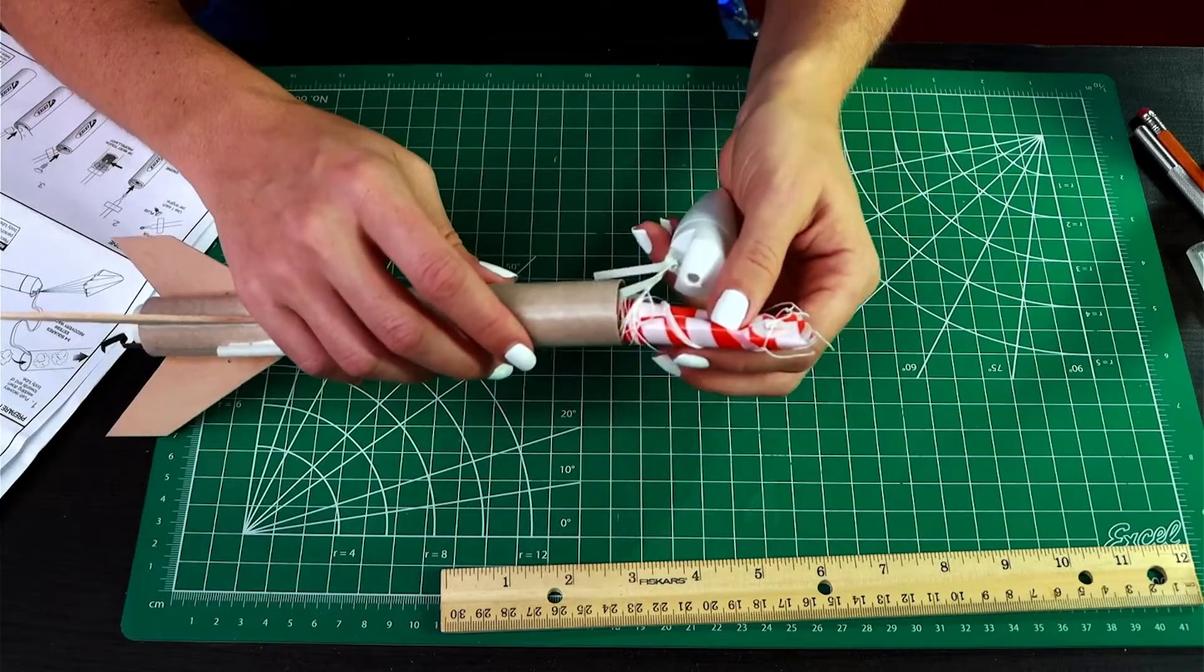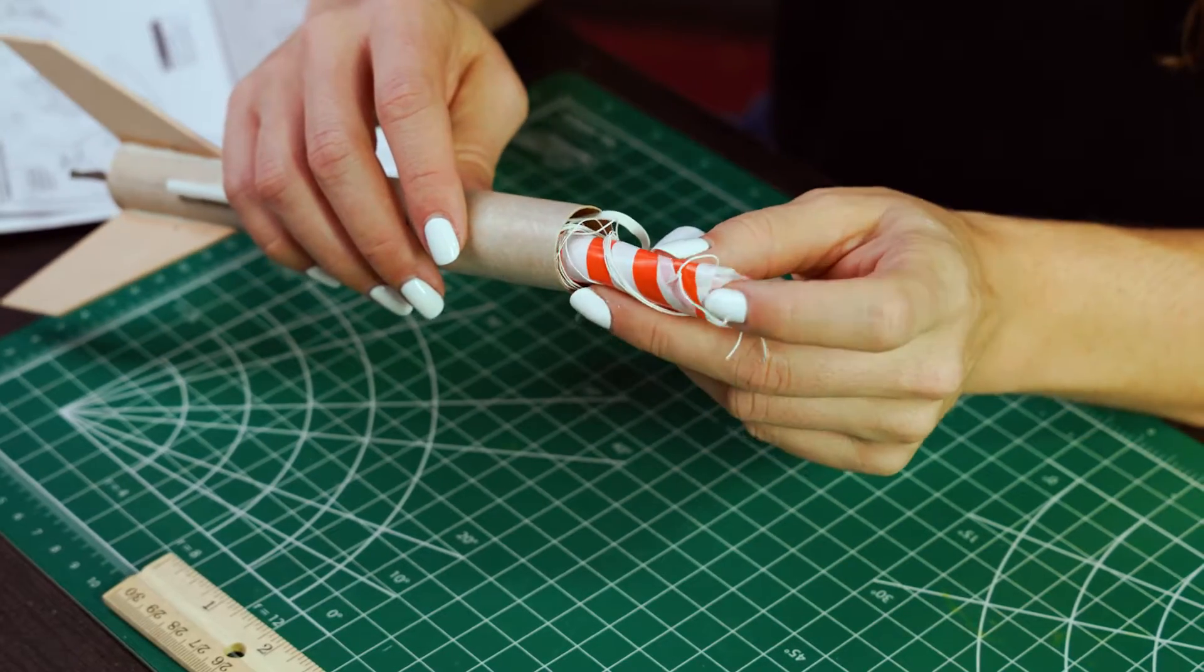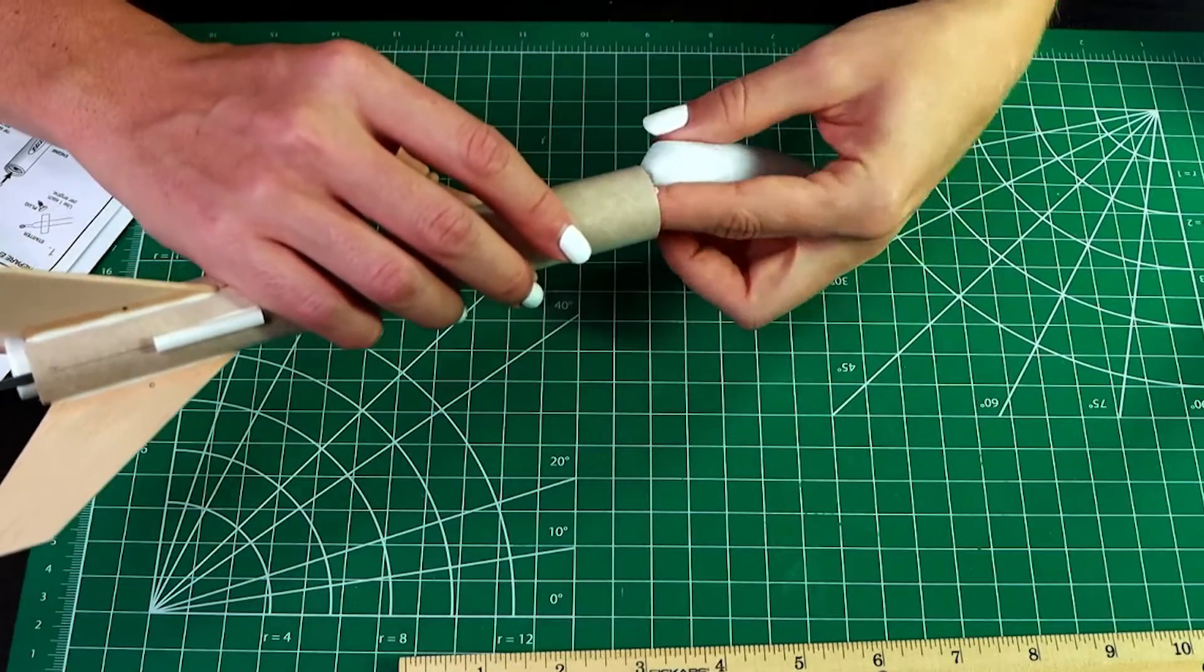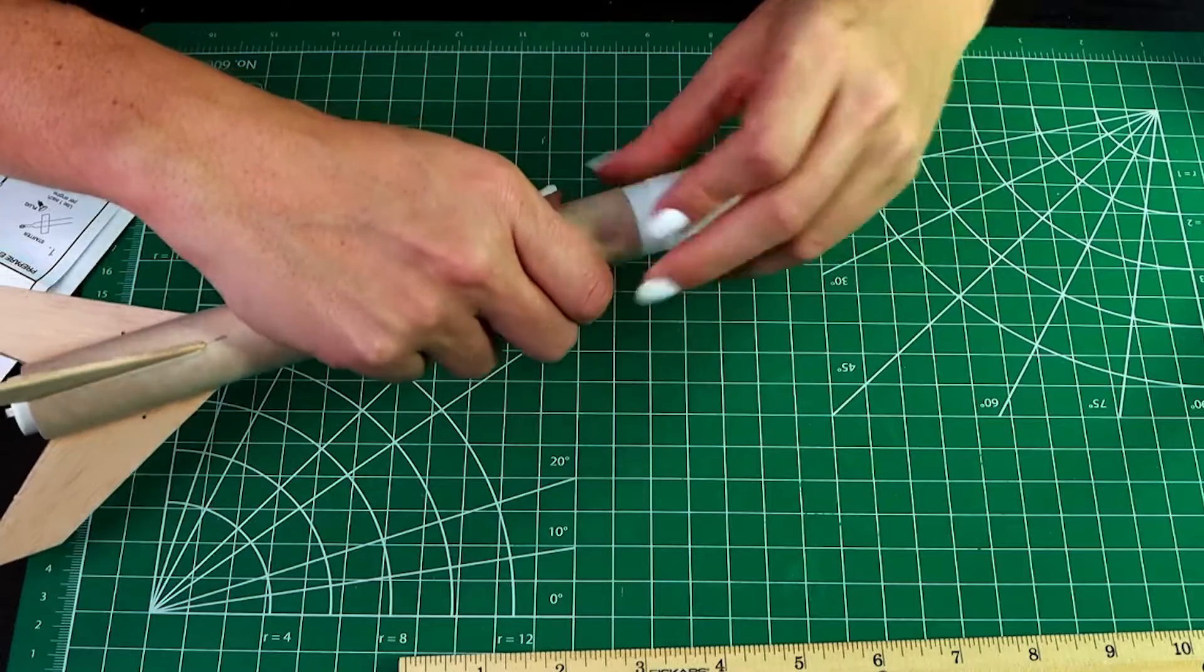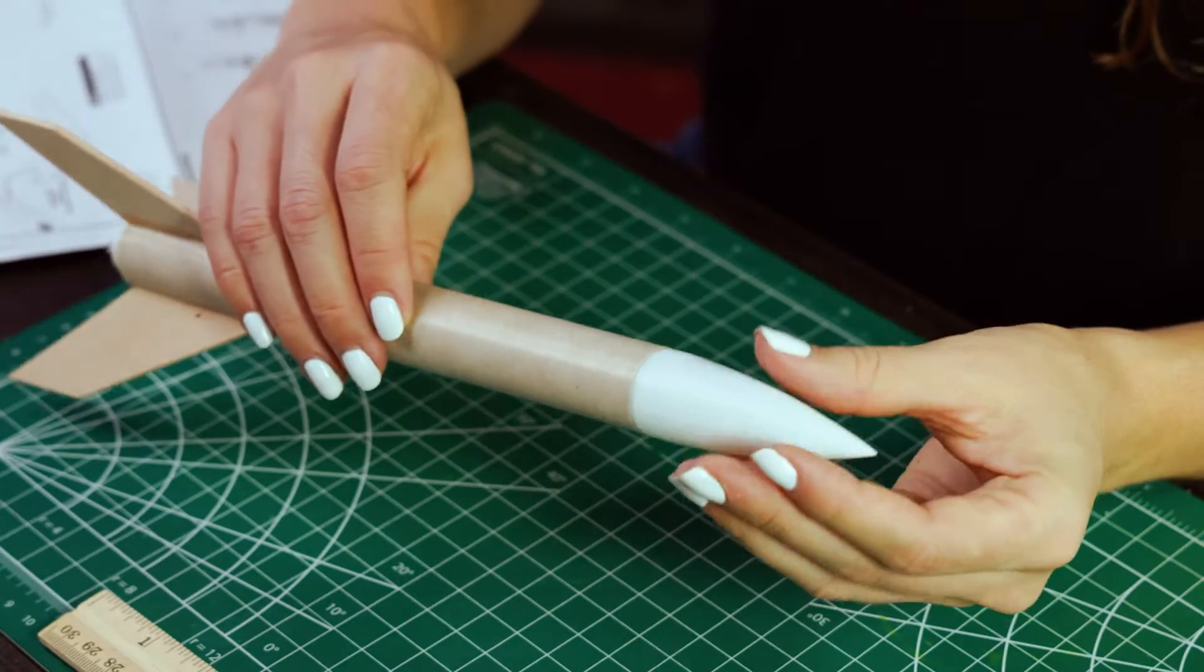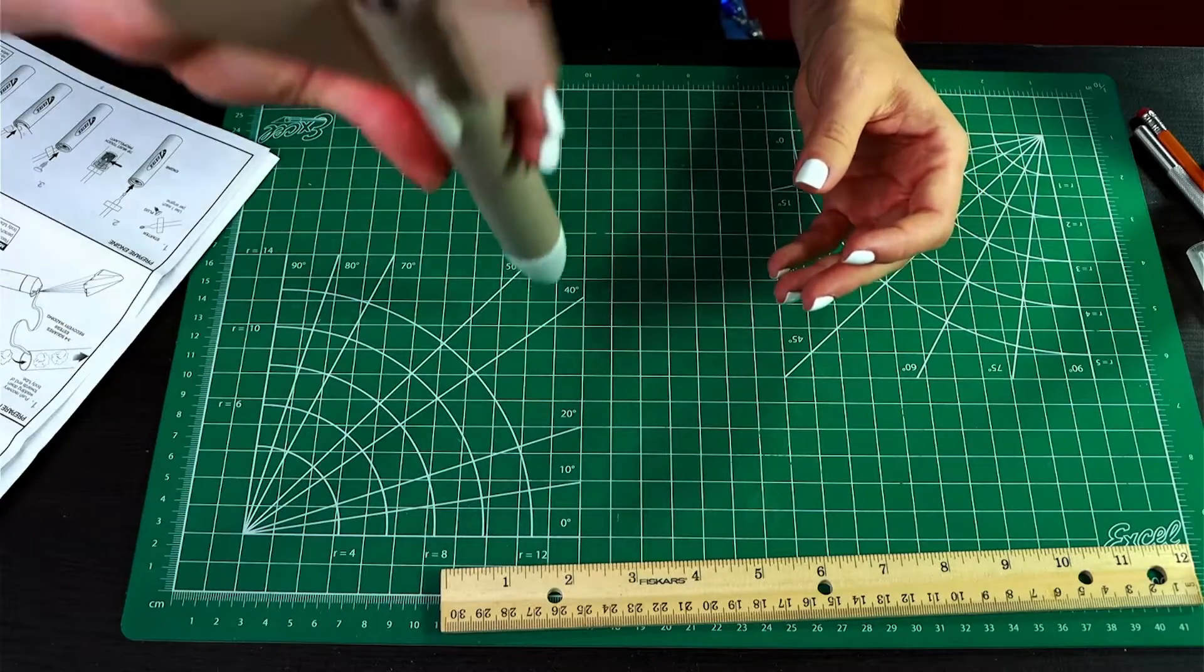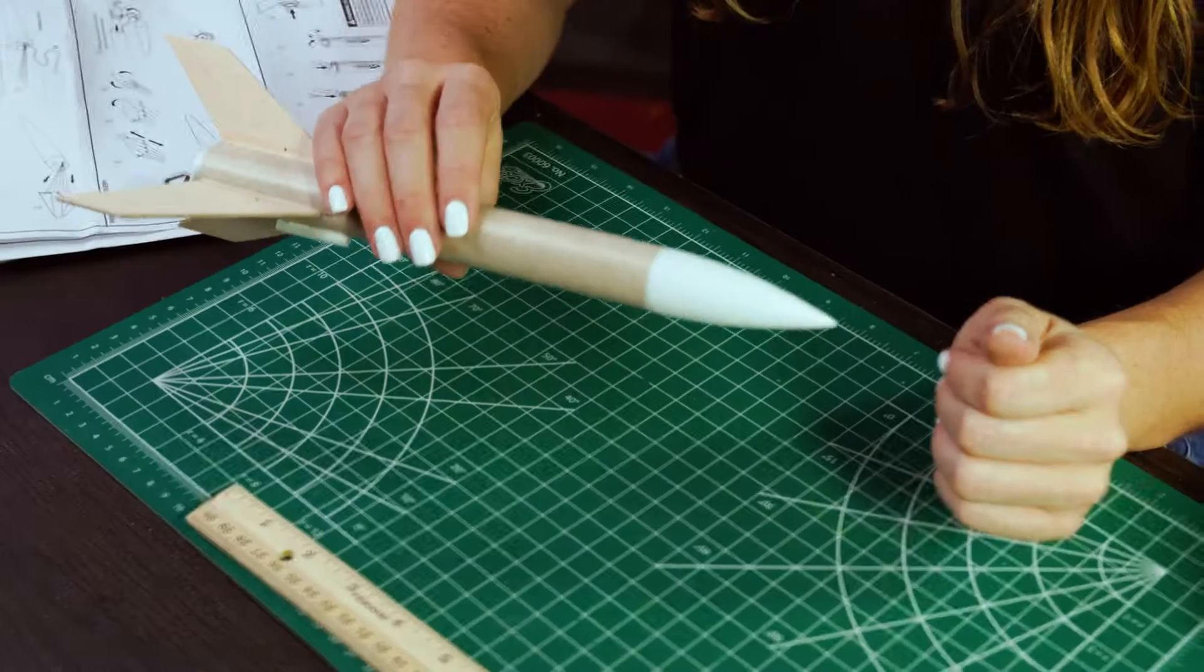And you want to make sure that your parachute has enough room that you can move it out easily. If it's too tight in there, it won't come out correctly. And then your nose cone should be a nice snug fit, but not too tight. If you tip it upside down, it shouldn't come off, but you want it to be nice and snug on there.